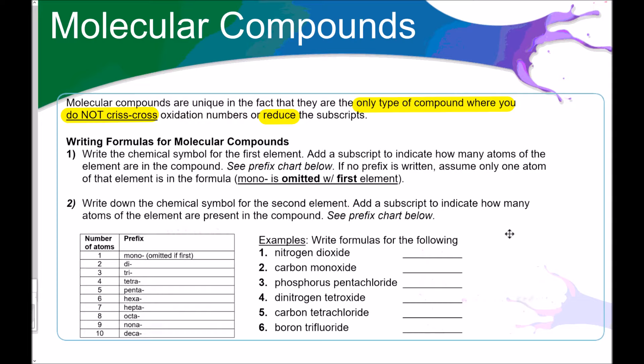Molecular compounds are unique in the fact that they are the only type of compound where you do not crisscross oxidation numbers or reduce the subscripts. So for writing the formulas for molecular compounds, write the chemical symbol for the first element and add a subscript to indicate how many atoms of the element are in the compound. See the prefix chart below. If no prefix is written, assume only one atom of that element is in the compound. Mono is omitted for the first element. Number two, write down the chemical symbol for the second element. Add a subscript to indicate how many atoms of the element are present in the compound.